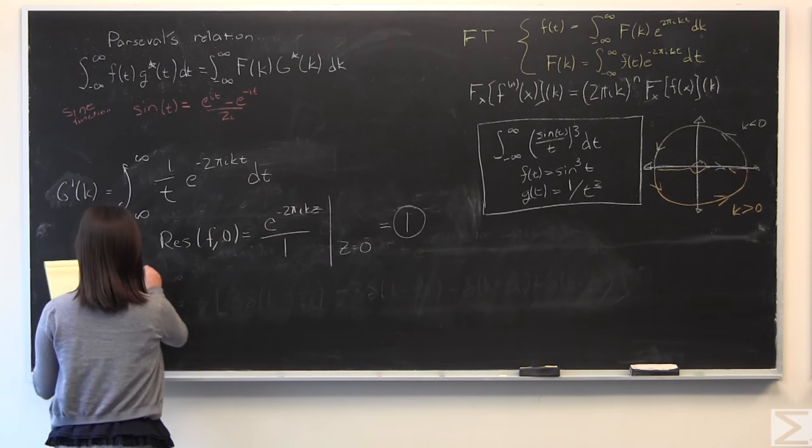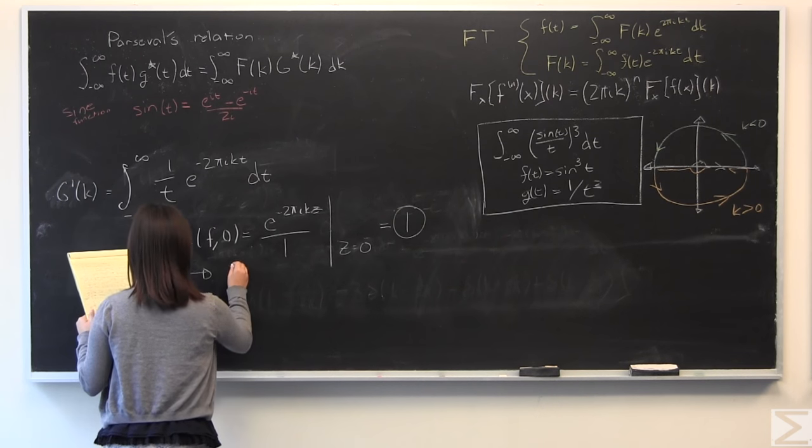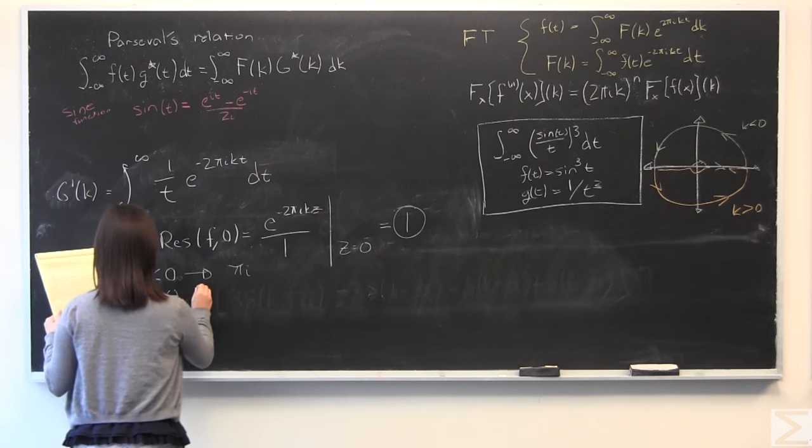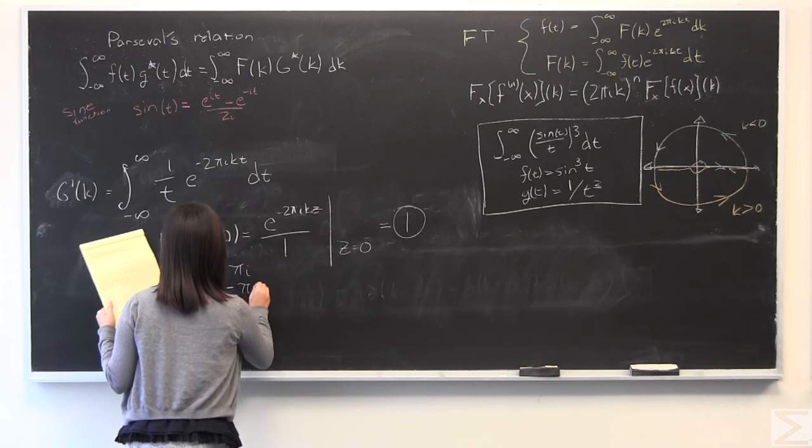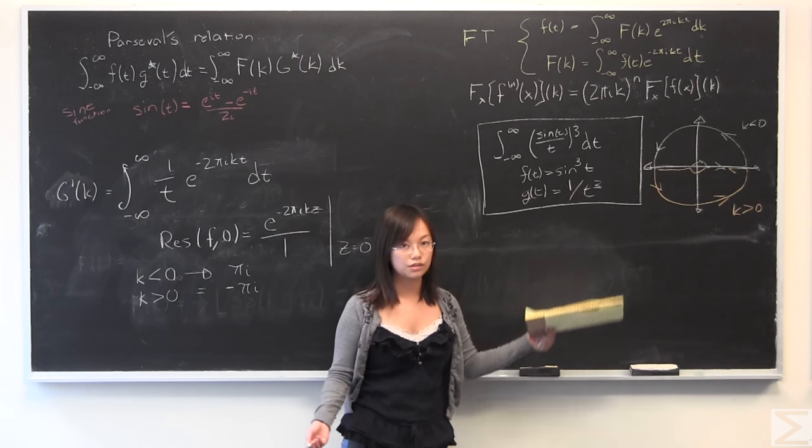So actually, we will get k less than 0, the integral becomes π i, for k greater than 0, and we get the integral is equal to negative π i. The negative sign comes from the fact that the contour is going opposite the direction we want.